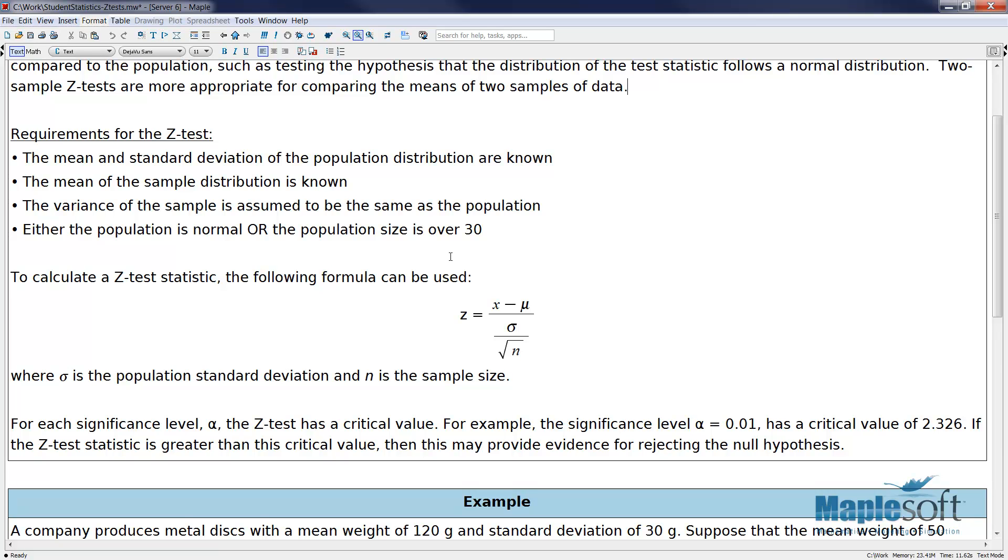In cases where the population variance is unknown or the sample size is less than 30, the student's t-test may be a more appropriate test.